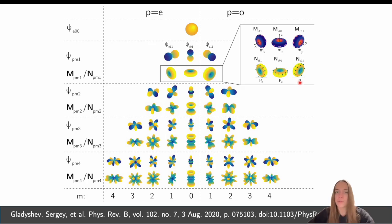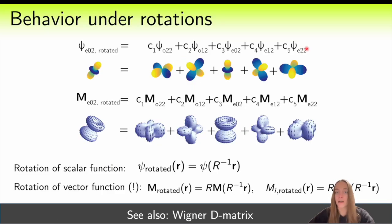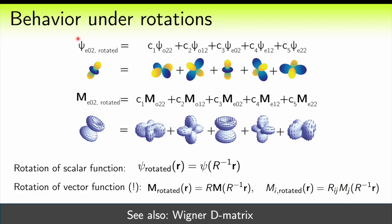I include the scalar functions here on purpose. Vector spherical harmonics have an amazing property: under rotations, they behave exactly the same as scalar functions — even though they look different and the rotation of a vector function is far more complex than that of a scalar function.